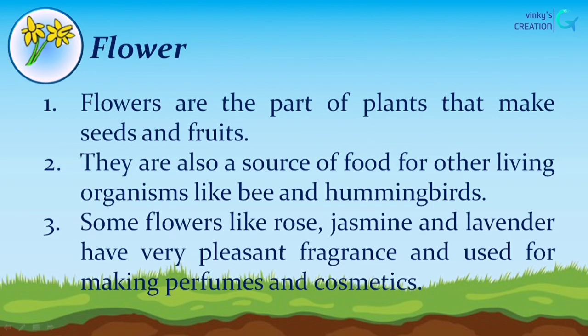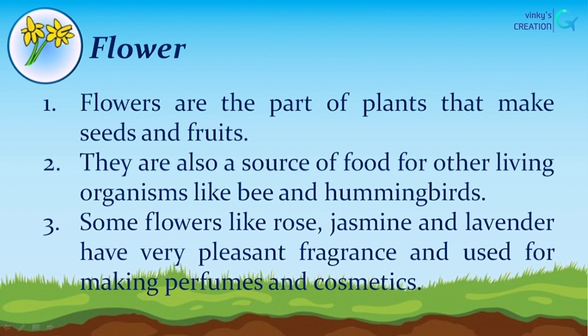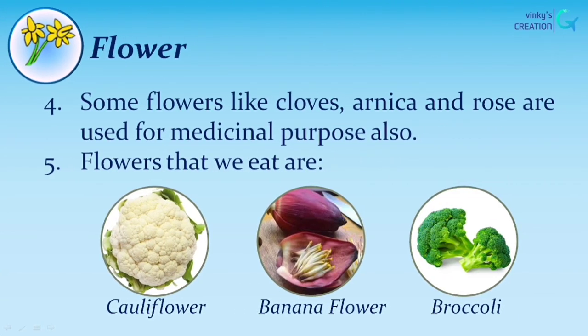Flowers are the part of plants that make seeds and fruits. They are also a source of food for other living organisms like bees and hummingbirds. Some flowers like rose, jasmine, and lavender have a very pleasant fragrance and are used for making perfumes and cosmetics. Some flowers like cloves and rose are also used for medicinal purposes. Flowers that we eat are cauliflower, banana flower, and broccoli.